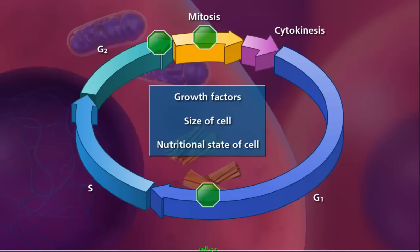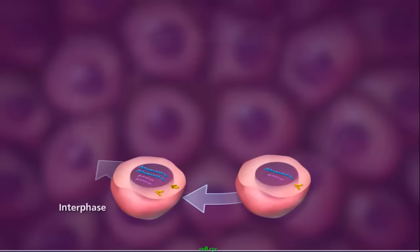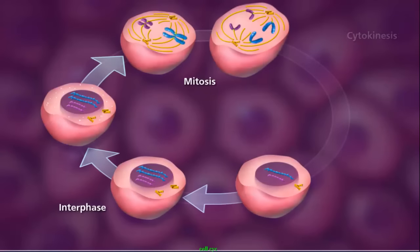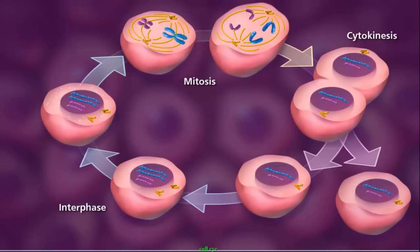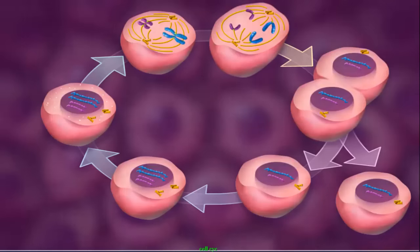Once all the checkpoints in interphase are cleared, mitosis can occur. From interphase to cytokinesis, the entire process of cell division can take on average 10 to 20 hours in a typical plant or animal cell. Depending on the nature and use of the cell, the process can happen at different frequencies as well.